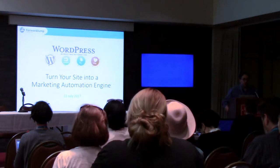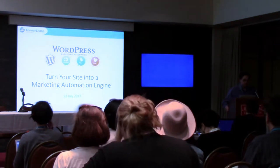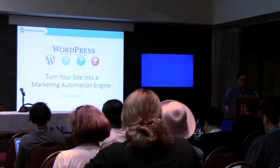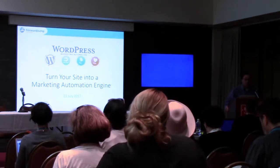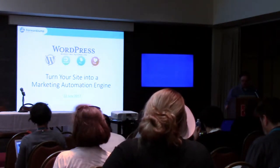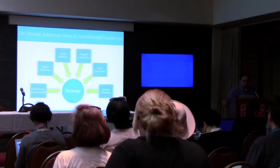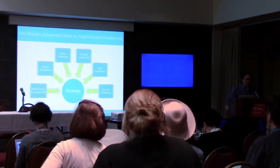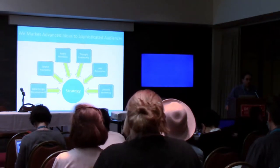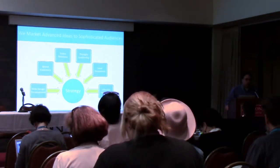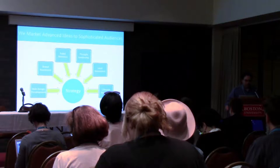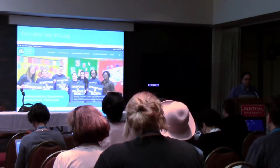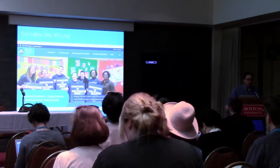Hi everyone. I hope everyone had a great lunch. My name is Josh Bialcoff, and I'm going to give a presentation on how to turn your WordPress website into a marketing automation engine. I run a company called Forward Jump Marketing, and we do WordPress web development and online marketing. We just redesigned a site for the Boston Teachers Union, btu.org.